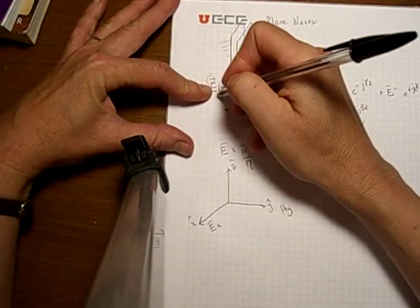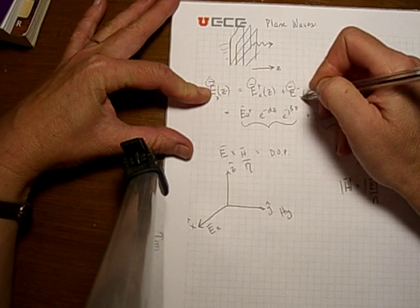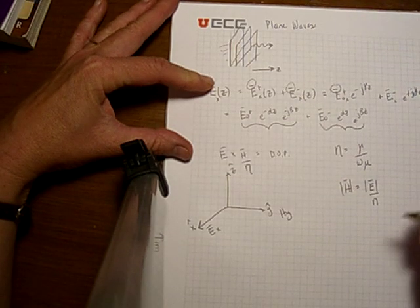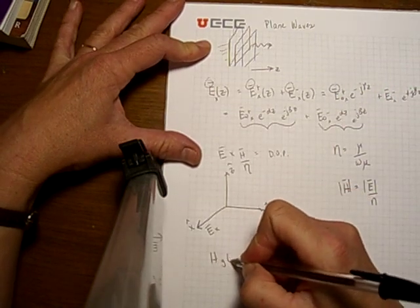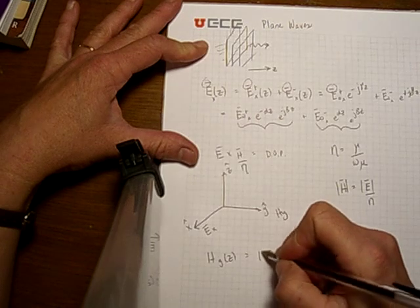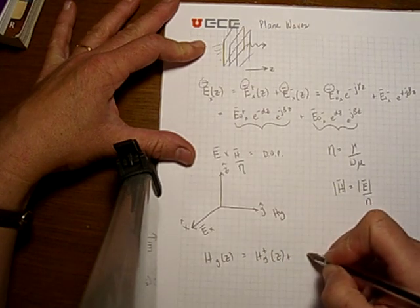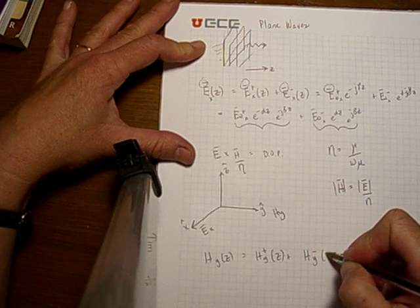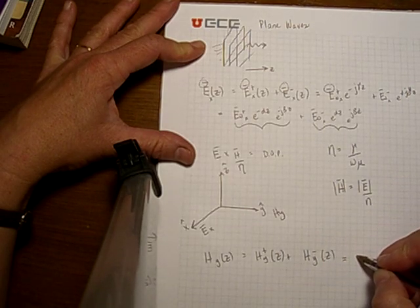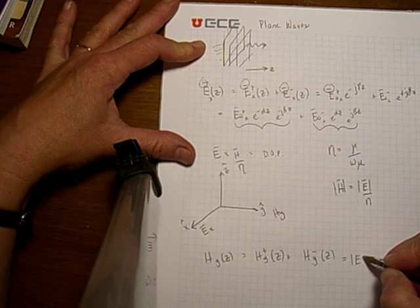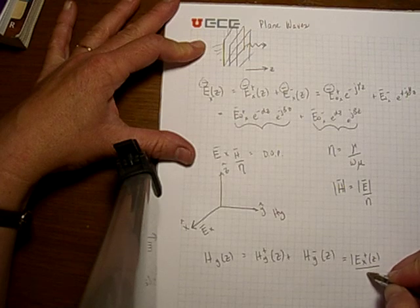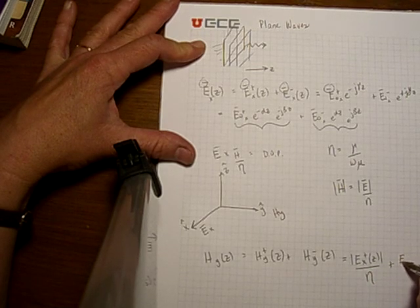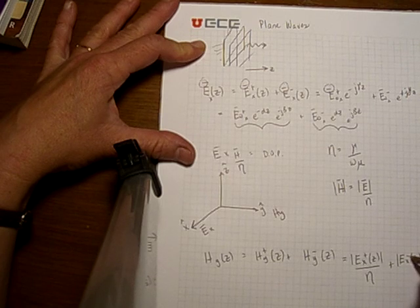So if I wanted to write this for an x-polarized electric field, I would end up with a y-polarized magnetic field. That's going to be the magnitude of Ex⁺(z) divided by eta plus the magnitude of Ex⁻(z), the negative one, also divided by eta.